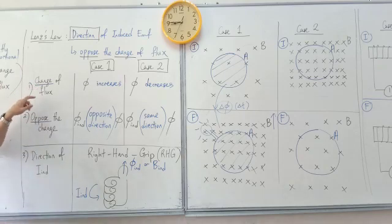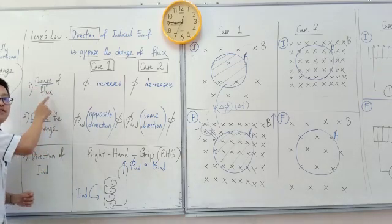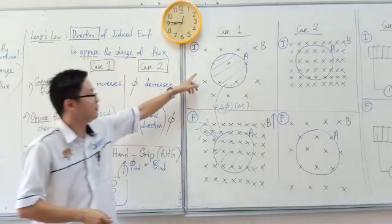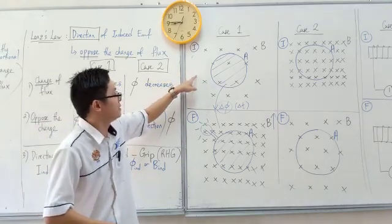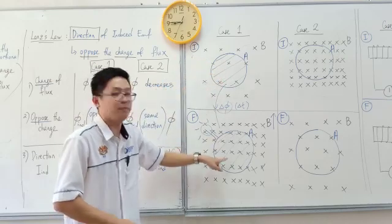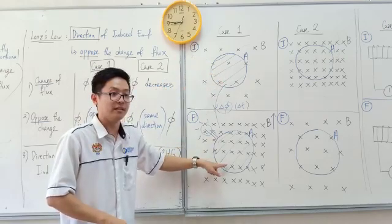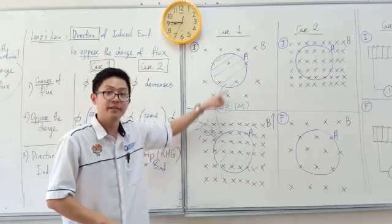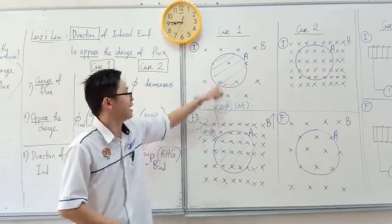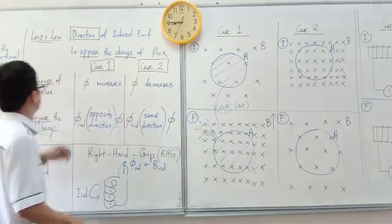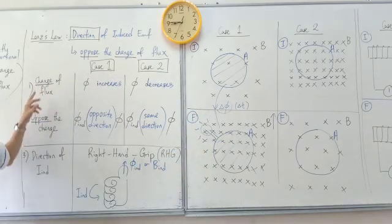There are two steps. First, there must be a change of flux happening — like these magnetic flux passing through the area suddenly become a lot. So there is a change of magnetic flux happening. For this case, the flux has increased — there is an increase. So there must be a change of magnetic flux.